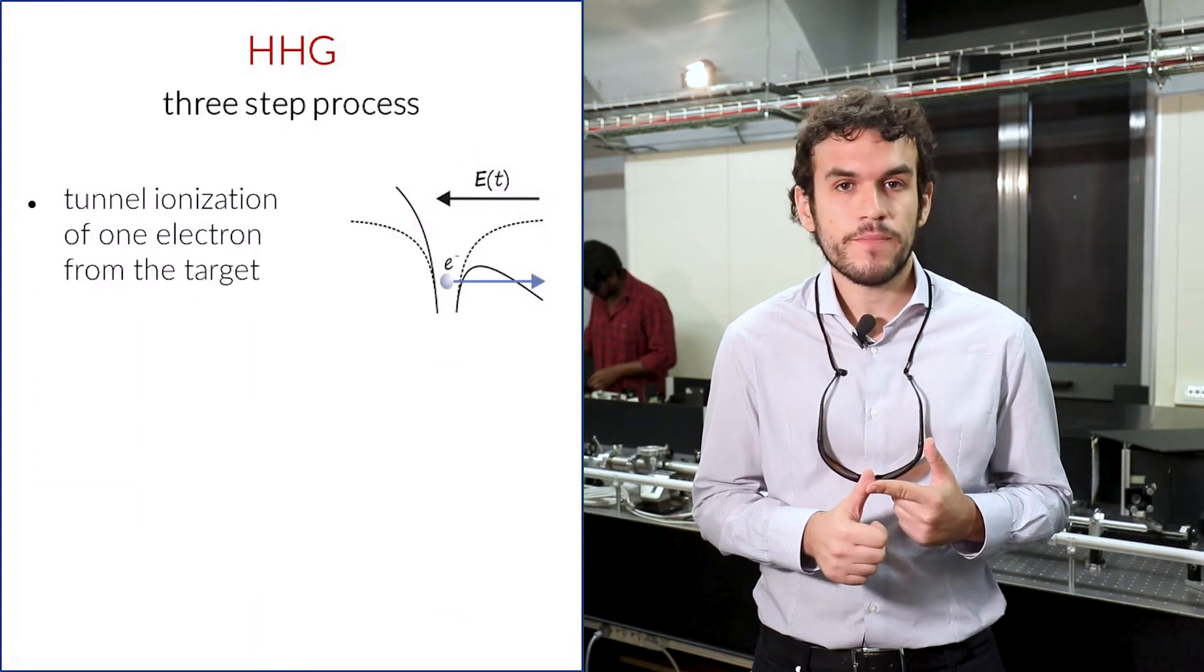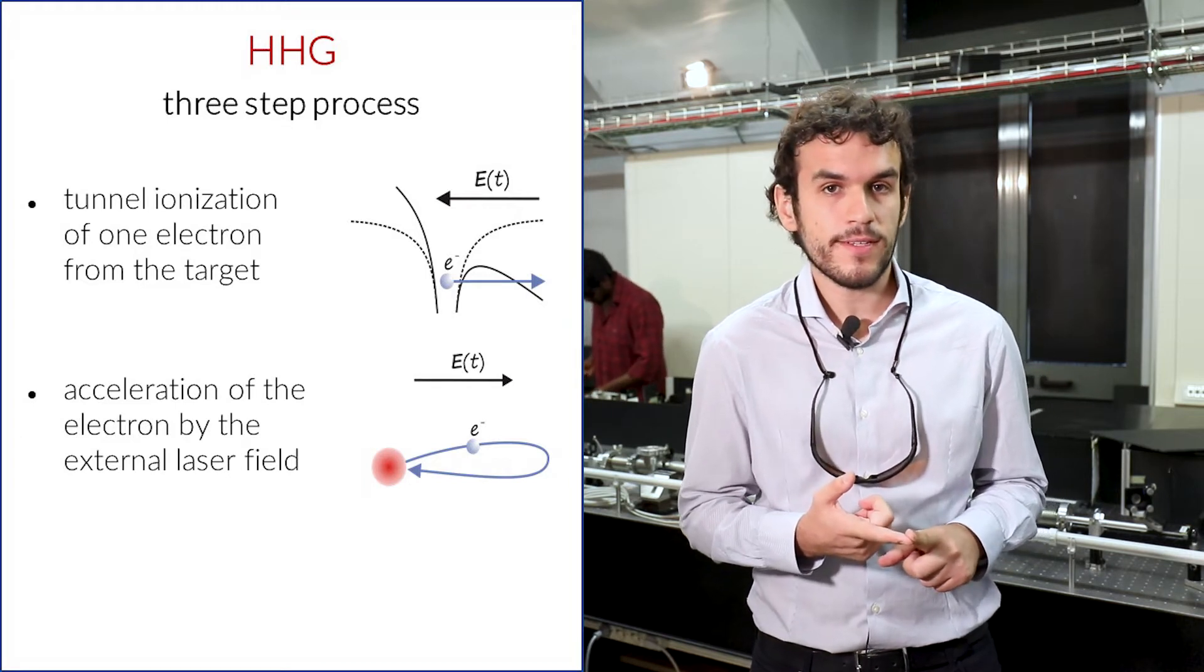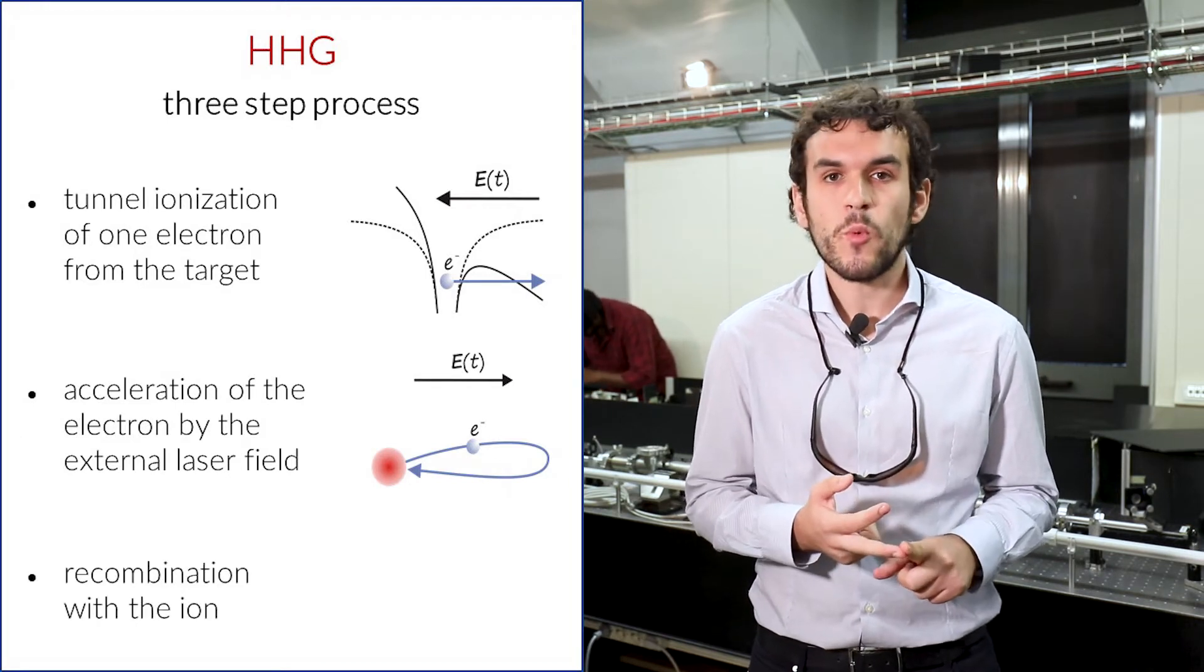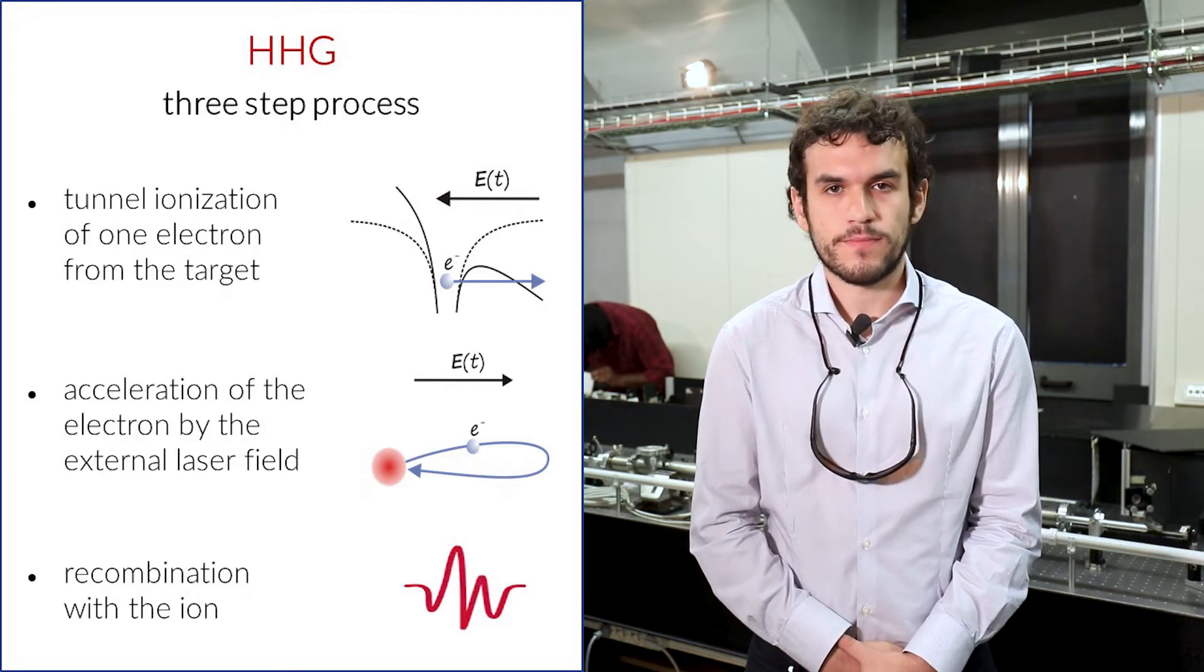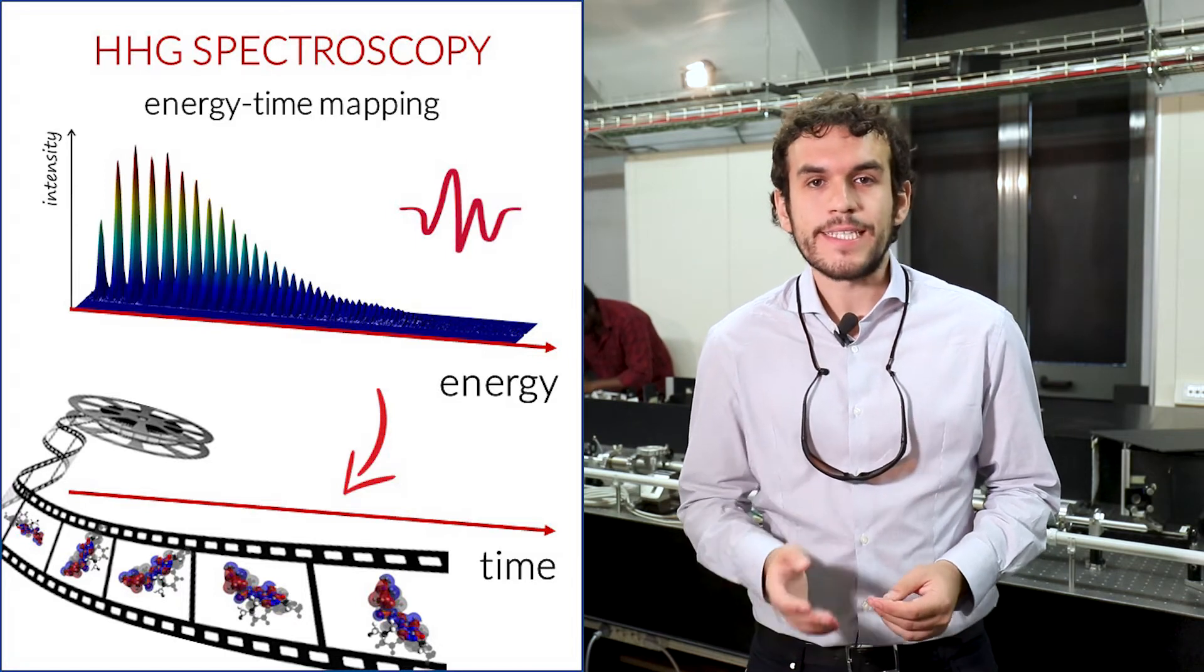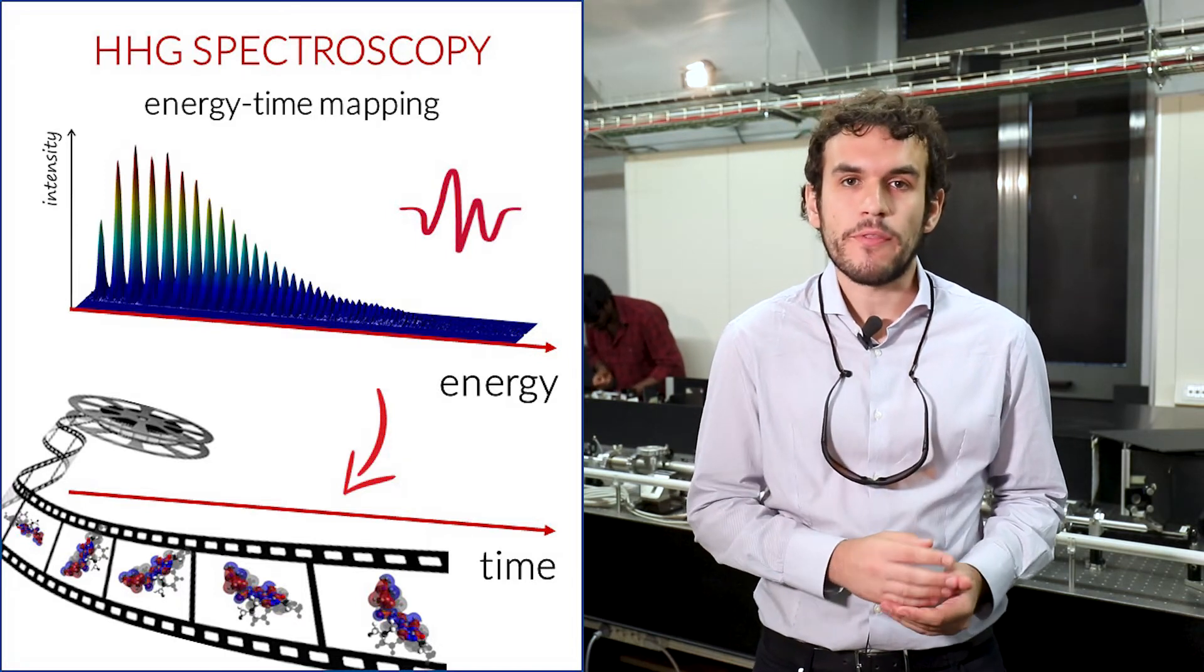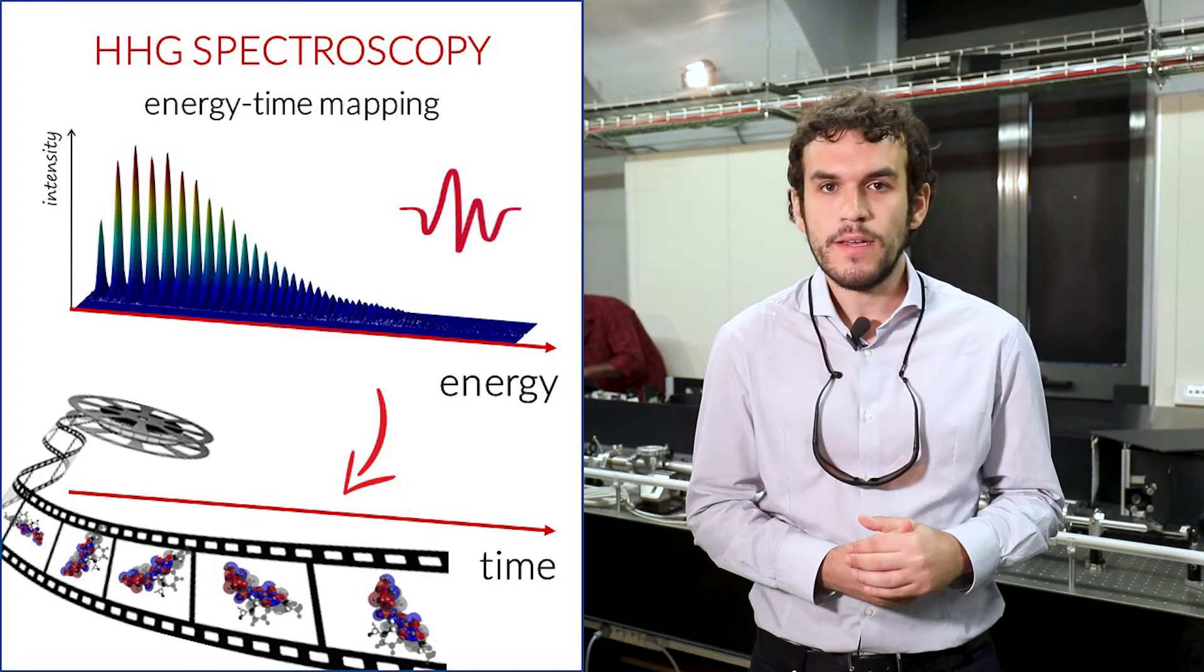It can be understood in terms of three steps: the ionization of the target, the acceleration of the electron by the external laser field, and its recombination with the ion, which leads to the emission of a high-energy photon. Since the energy of this photon is related and depends on the ionization and recombination times of the electron, the dynamics of the system are mapped in the harmonic radiation.